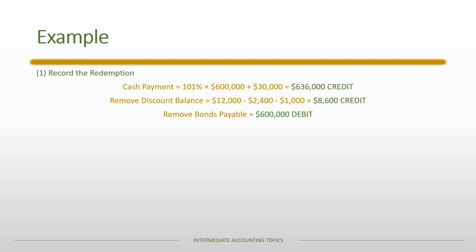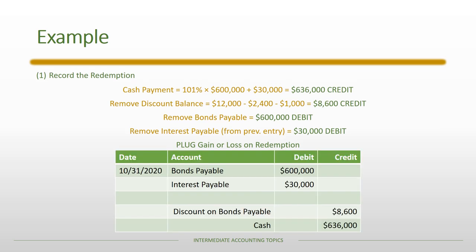We also remove the bonds payable, which has a credit balance, with a $600,000 debit entry. We remove the interest payable just recorded with a $30,000 debit. Because we are extinguishing the debt prior to maturity there is likely a gain or loss, which is the plug into the final journal entry. Looking at the debits and credits, the plug is a debit, meaning we have a loss on bond redemption — we paid more than the book value of the bonds.